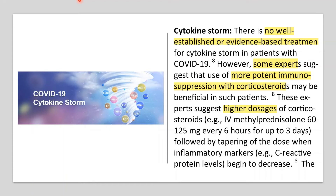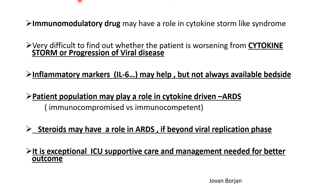What about cytokine storm? There is no well-established or evidence-based treatment. Some experts suggest more potent immunosuppression with corticosteroids at higher doses. To summarize: immunomodulatory drugs may have a role in cytokine storm-like syndrome. It is very difficult to determine whether the patient is experiencing cytokine storm or progression of viral disease. Inflammatory markers like IL-6 may help but are not always available at bedside. The patient population may also influence outcomes — immunocompromised vs. immunocompetent. Ultimately, exceptional ICU supportive management is needed for better outcomes.